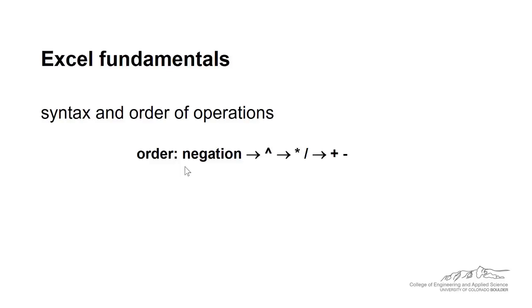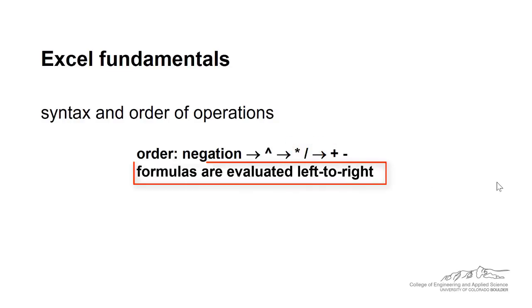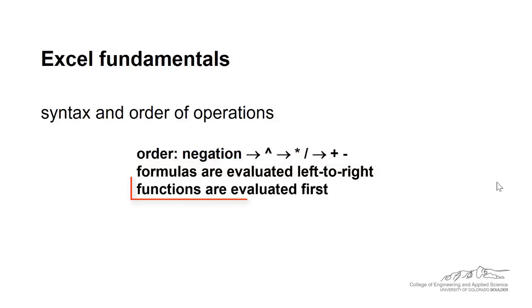The first thing that Excel does is negation, and then exponentiation, followed by multiplication, division, and then addition and subtraction. Formulas are evaluated left to right. Functions in Excel syntax are actually evaluated first. So if you have a function in your formula, that's going to be evaluated first, and then formulas are evaluated left to right in the proper order of operations.